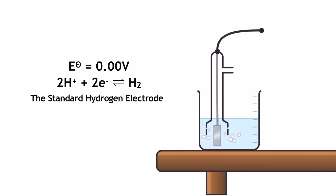The standard hydrogen half cell is the reference standard to which all other half cells are compared. We have to do this because we are unable to measure the standard electrode potential of a half cell by itself. So by defining the standard electrode potential of the hydrogen half cell as 0.00 volts, we can compare the tendency of all other half cells to donate or accept electrons to that of the standard hydrogen electrode, and report this as a positive or negative voltage value.